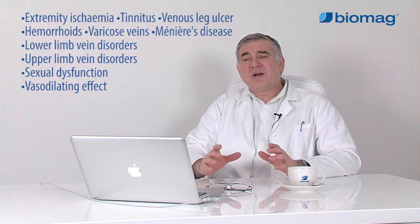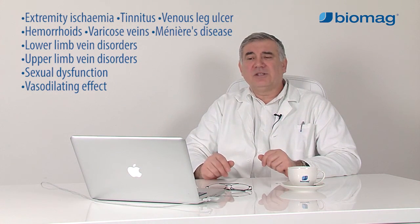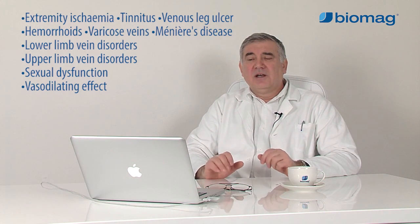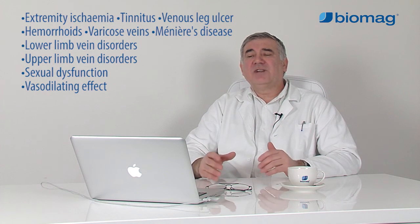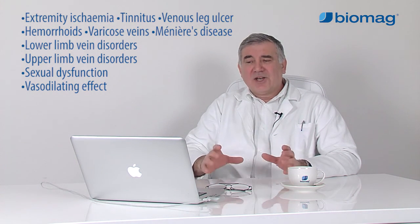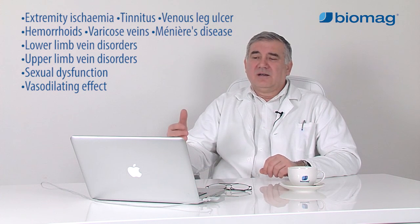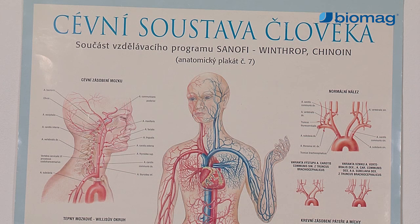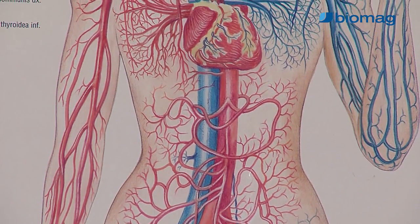In addition, the pulsed magnetic field acts against the stacking, or coin roll formation, of red blood cells. Red blood cells tend to form cylindrical clusters called coin rolls. These formations sediment faster, they pass through the vascular lumen more poorly, and they have a smaller area for oxygen binding and its transfer to tissue.